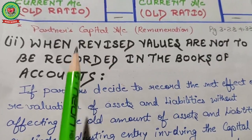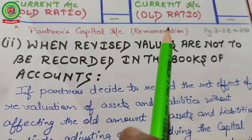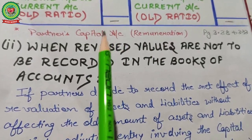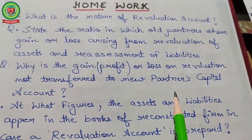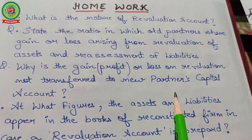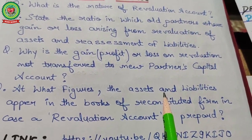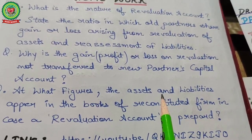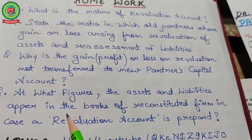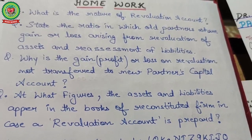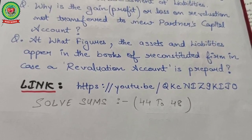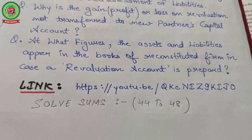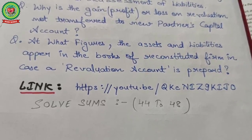The second method — when revised values are not to be recorded in the books of accounts — will be discussed in the next lecture along with the accounting treatment of accumulated profits. Today's topic covered revaluation journal entries and how to prepare the revaluation account. Homework: state the nature of revaluation account, the ratio in which partners share gain or loss from revaluation, why gain or loss is not transferred to the new partner's capital account, and solve practical problems sums 44 to 48.